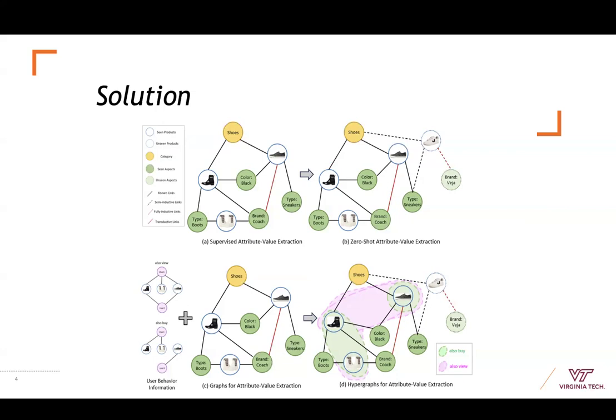The top part of this figure shows an example comparison between supervised and zero-shot attribute value extraction. Existing works formulate relation propagation as a transductive link prediction task, as shown in figure A, where links can only be predicted between seen nodes. To recognize new aspects for new products, negative links are added in the original graph, and the model is trained to predict whether an edge exists between two nodes based on the node features, which is shown in figure B.